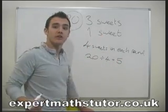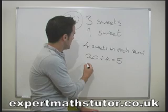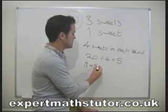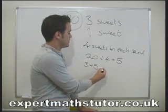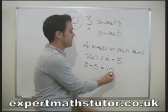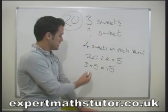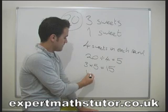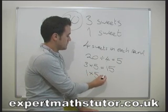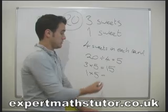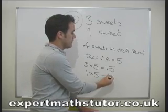So how many sweets am I going to get in five rounds? I'm going to get three times my five sweets in one round. So in five rounds I'm going to get 15 sweets. My little sister, she's going to get one times five rounds.